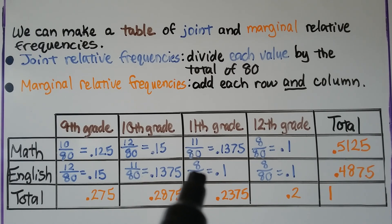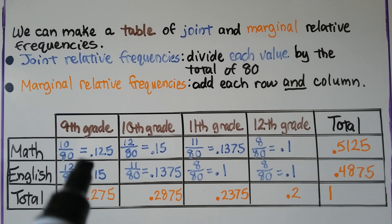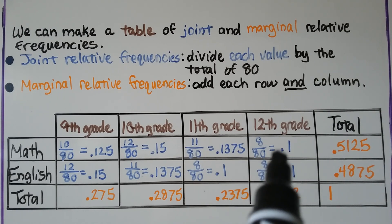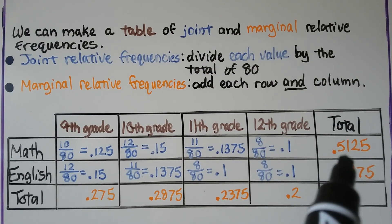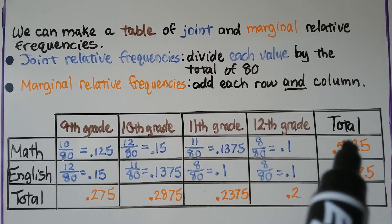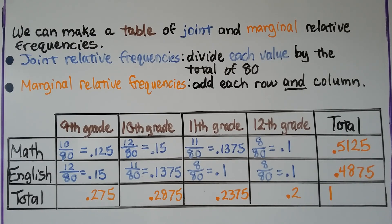Eight eightieths in eleventh grade and eight eightieths in twelfth grade. If we total the 0.125, the 0.15, the 0.1375 and the 0.1, we're going to get a total of 0.5125 for here. That's our marginal relative frequency for math. For English we total the 0.15, the 0.1375, the 0.1 and the 0.1, and we get 0.4875.